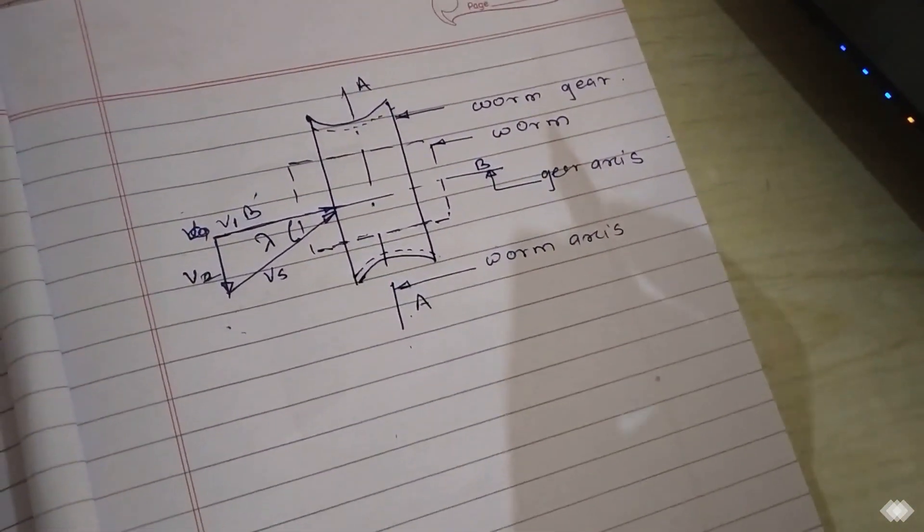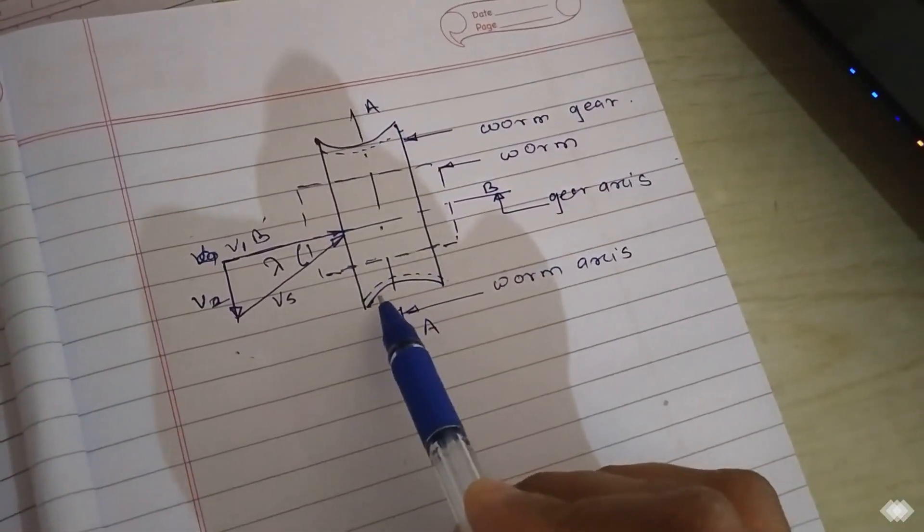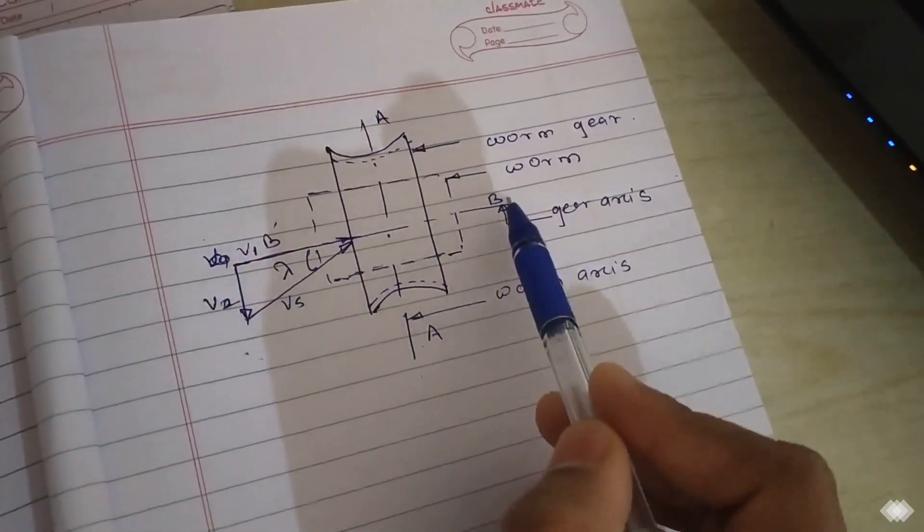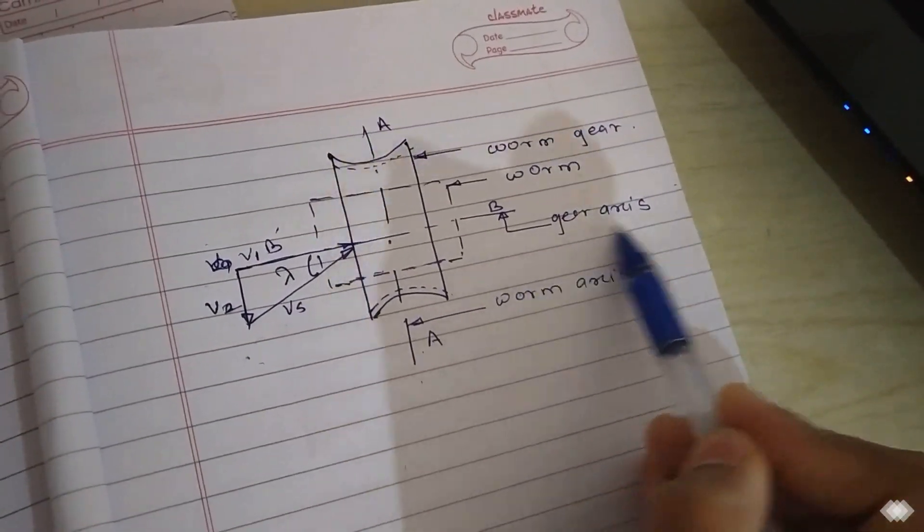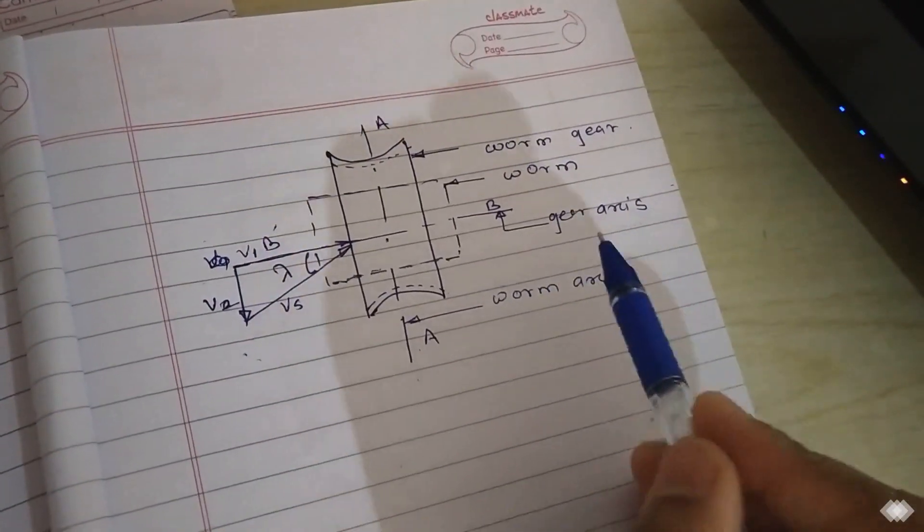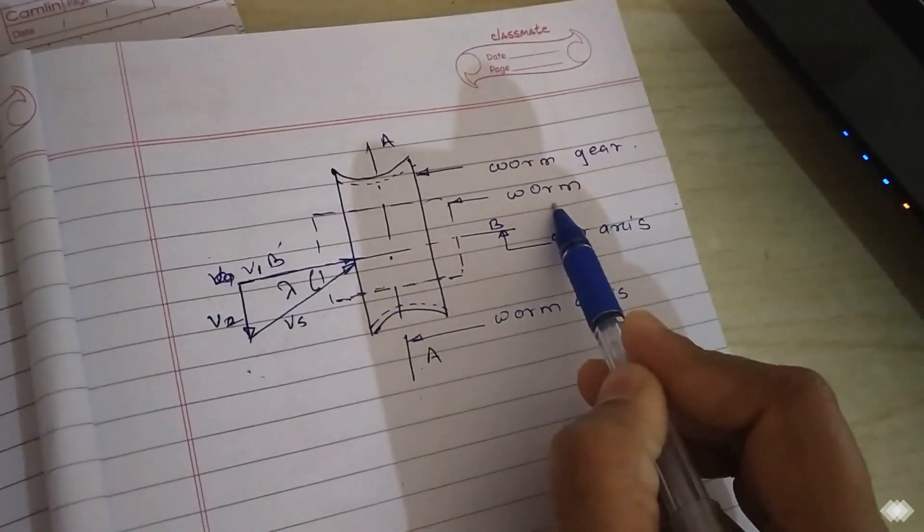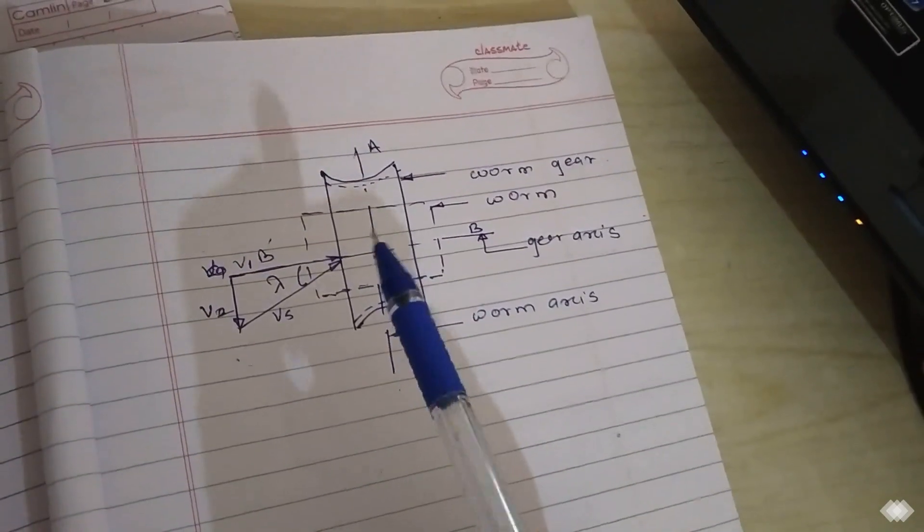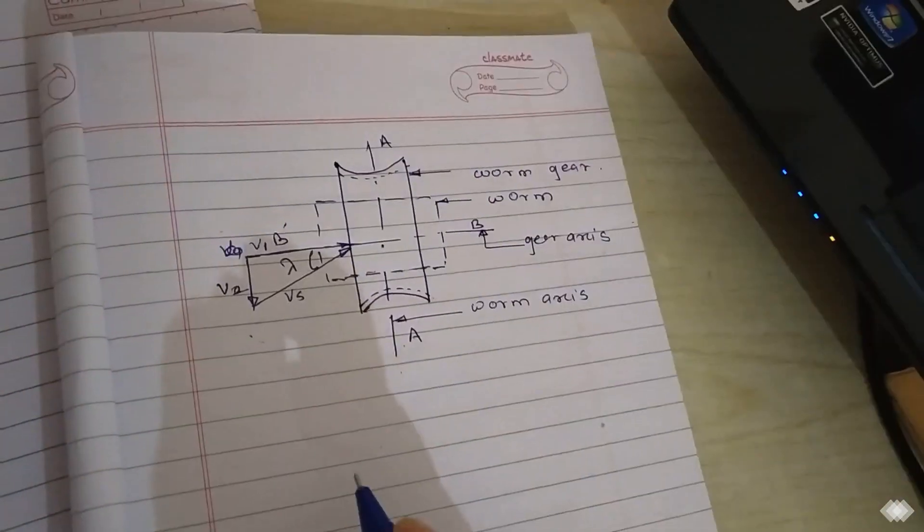We are going to use this top view of worm and worm gear. Here we have the worm gear and this is the axis. BB is the axis of worm gear. This line represents the worm and AA is the axis of worm. Now worm is rotated in this way and this gear is rotated about this axis.